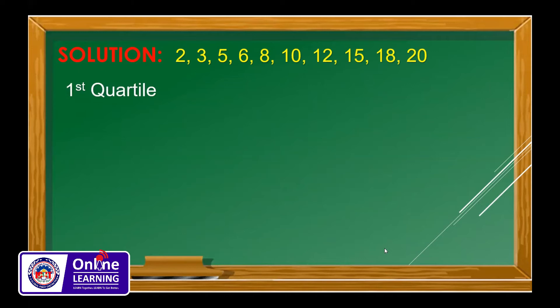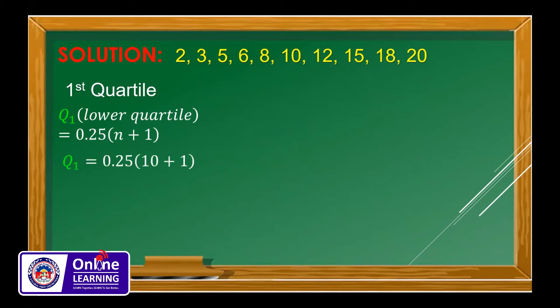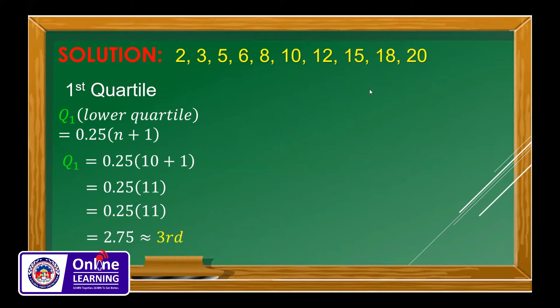To find Q1, the formula is 0.25 × (n + 1). The number of data values is 10, so 10 + 1 = 11, times 0.25 equals 2.75. Rounding up gives us 3, meaning the third position. The third value in our arranged data is 5, so Q1 equals 5.